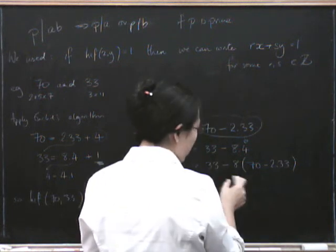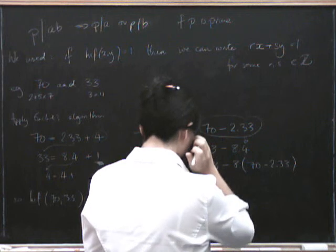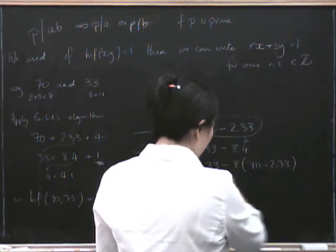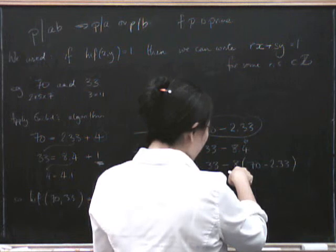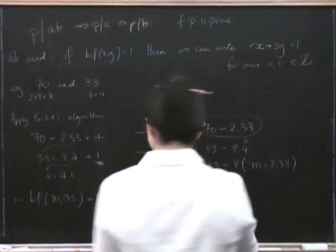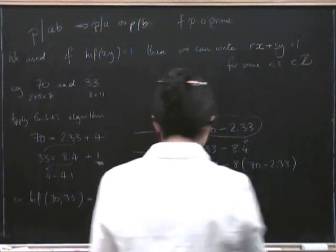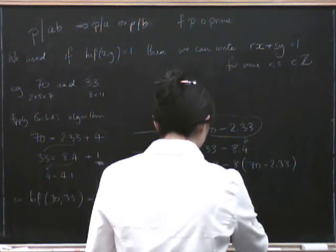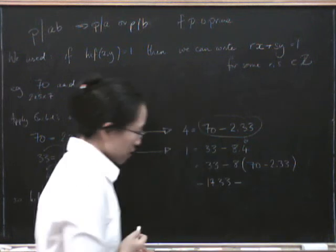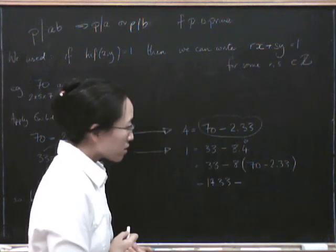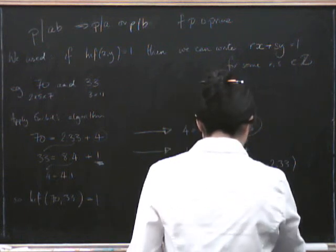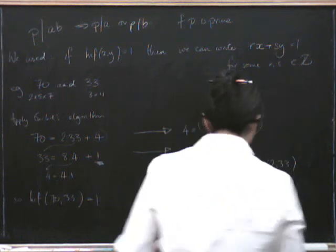So how many 33s have we got? Well, let's see, we've got over here we've got 1. And here we've got minus 8 times minus 2, which is plus 16. So all together we've got 17 thirty-threes. And we've got minus 8 seventies.